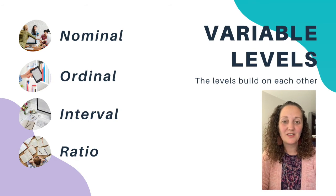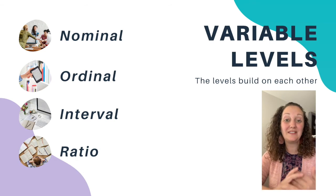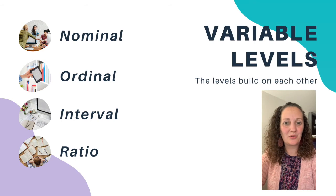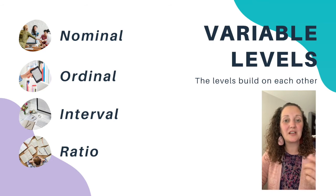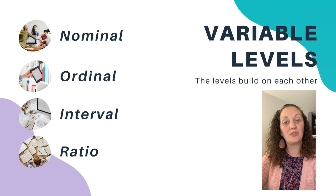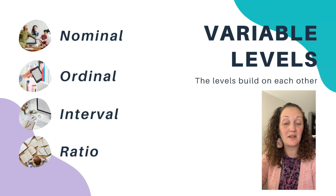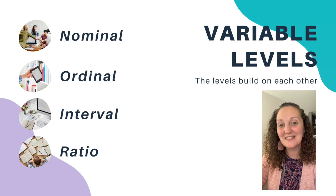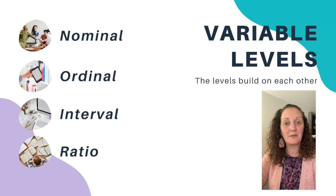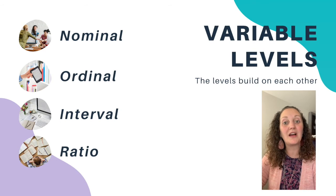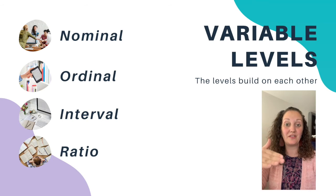Now that you understand what variables are, it's really important that you understand the variable levels. These are words you probably haven't heard before: nominal, ordinal, interval, ratio. But they are terms you're going to need to understand for the rest of the semester. The most important thing to remember is that they build on one another. If you can remember the order — nominal, ordinal, interval, then ratio — it can help you figure out what kind of level a variable is. Nominal has certain characteristics, ordinal has all of those plus a new one, interval has all of those plus another new one, and so on.